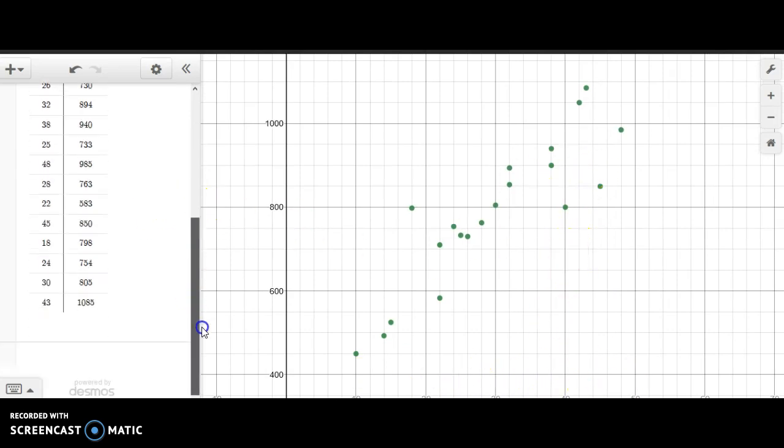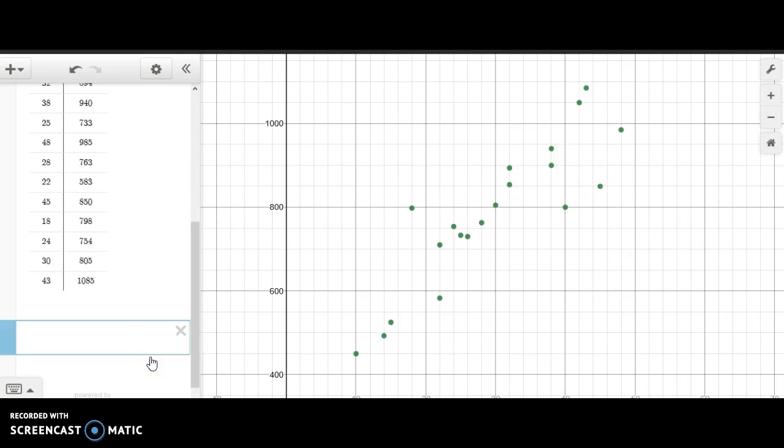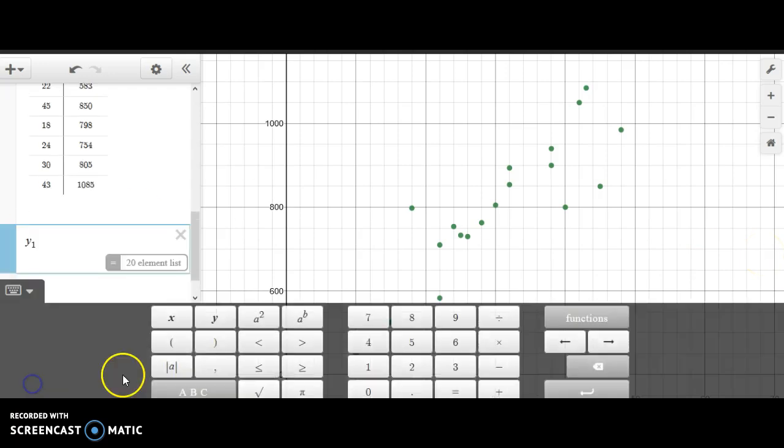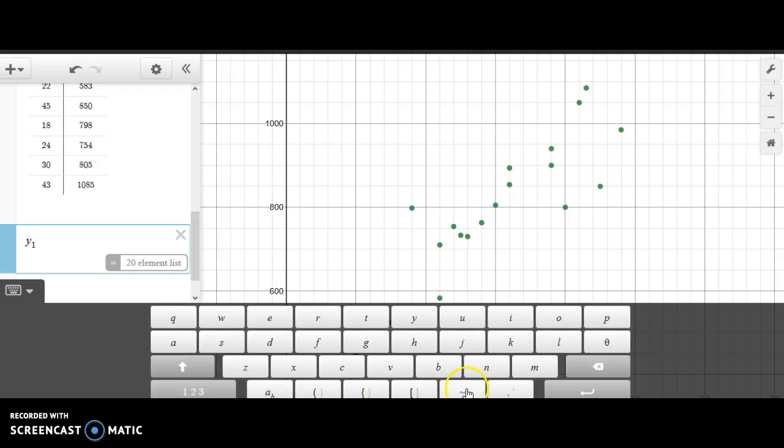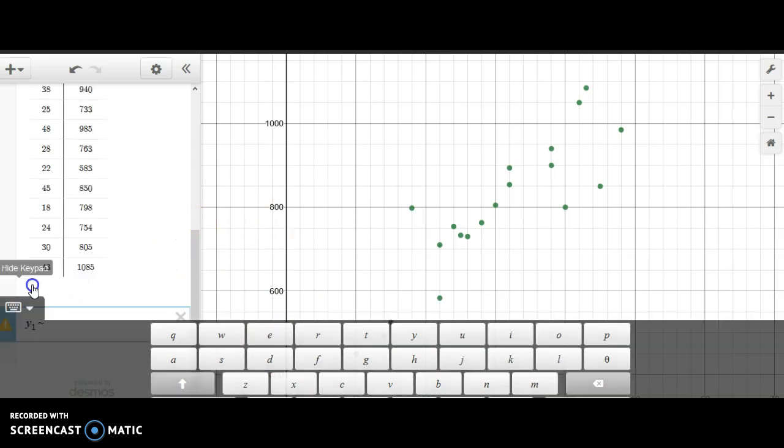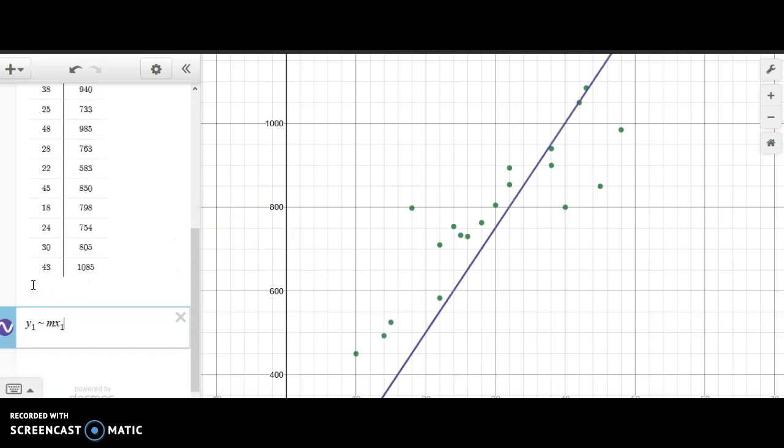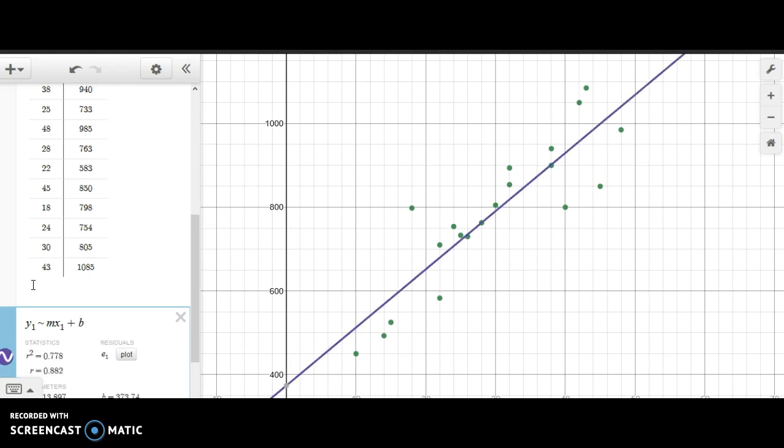Now what we'll do is we will go down and we will have Desmos calculate our line of best fit. Y1 and X. I'm just pressing Y1 on the keyboard and then the little tilde and then X1 from the keyboard, along with M. And I am also just using the keyboard to enter this information.